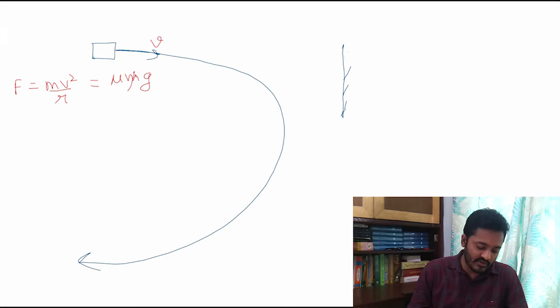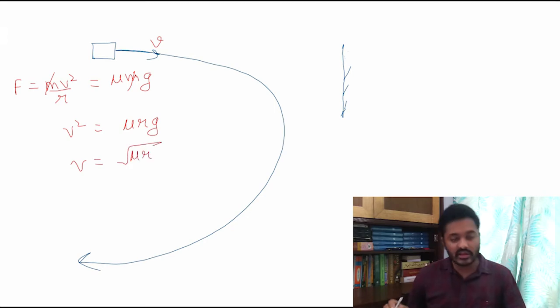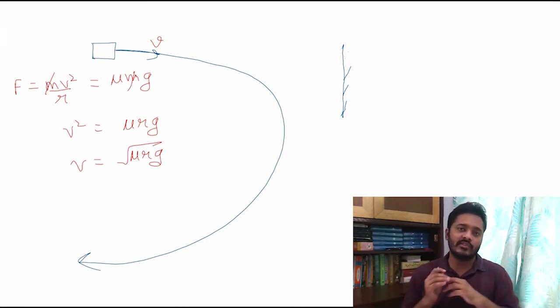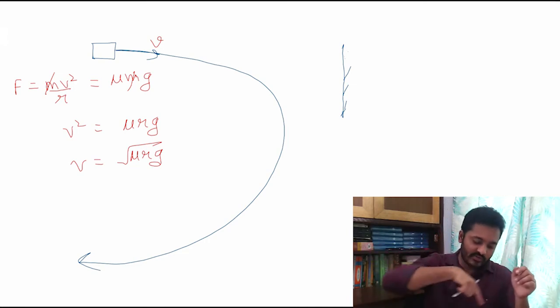If I solve for V², I get V² = μrg, so V = √(μrg). The radius is the distance that will become the radius, so in that radius the car will turn.